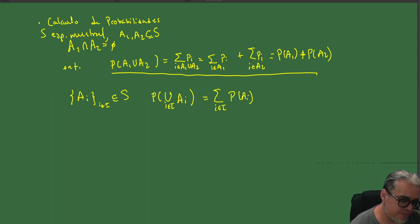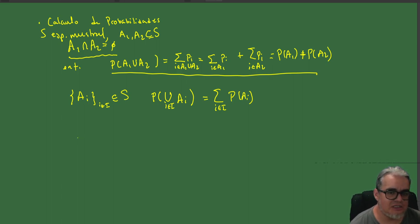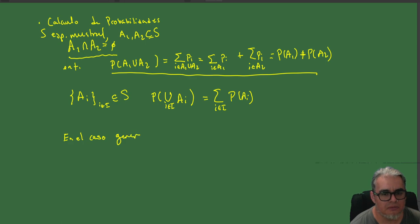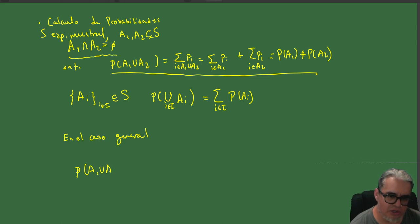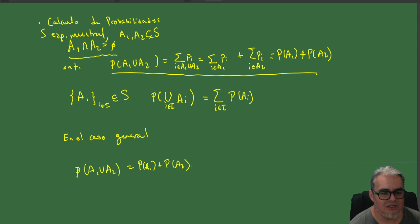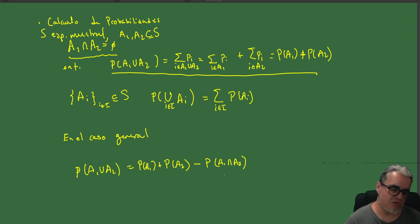Esto es en el caso en que son eventos ajenos. Si los eventos no son ajenos, en el caso general, la probabilidad de A₁ ∪ A₂ toma en cuenta los que están en A₁ y los que están en A₂, pero la intersección está en ambos conjuntos. Si no son ajenos, estamos contando los elementos de la intersección dos veces, entonces hay que quitarle la probabilidad de la intersección: P(A₁ ∪ A₂) = P(A₁) + P(A₂) − P(A₁ ∩ A₂).